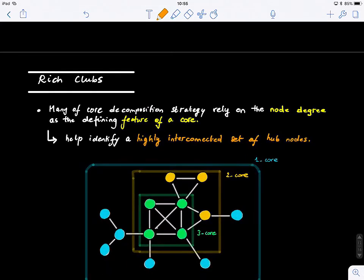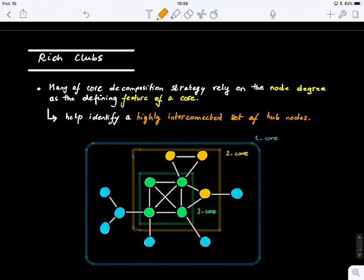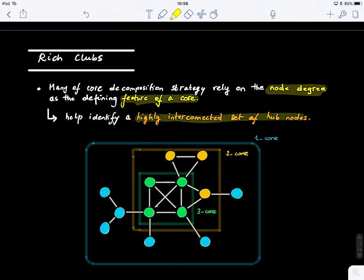Now, the last part is Rich Club. This is another concept, another feature of a core. A core decomposition strategy relies on the node degree. So far we saw that all we relied on or used is node degree to do the core decomposition, or the strength in weighted networks. So this is the defining feature of a core, right. It helps identify a highly interconnected set of hub nodes.